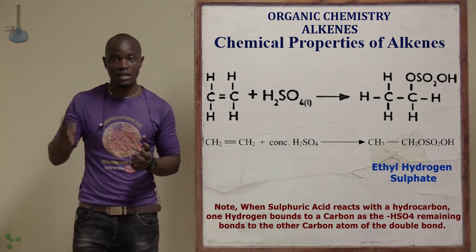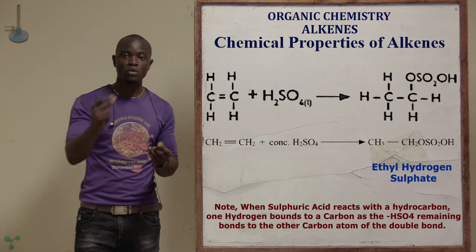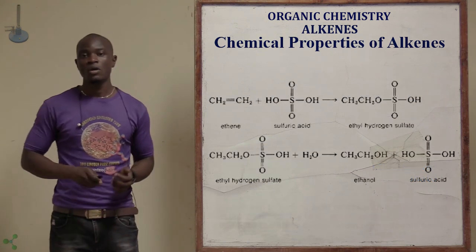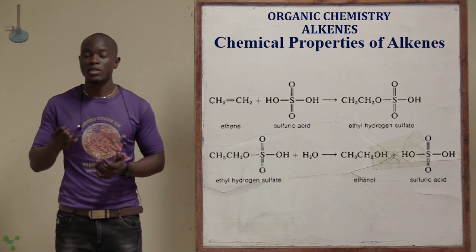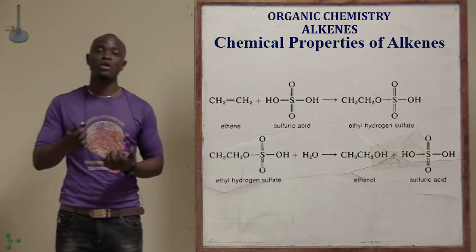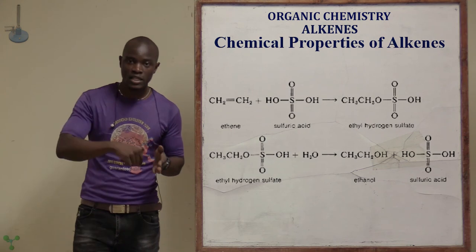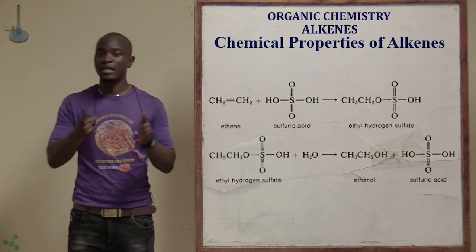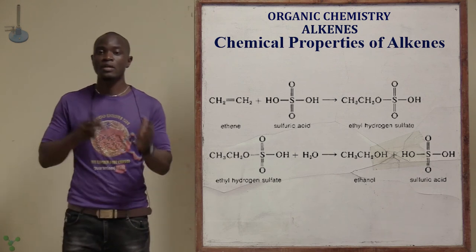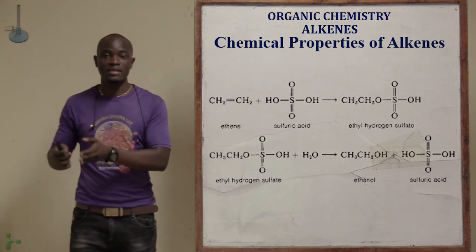The double bond is the one which breaks to release electrons, and the foreign compound bonds to these free electrons to achieve ethyl hydrogen sulfate when it reacts with ethene gas. When this ethyl hydrogen sulfate is added to water, we get an alcohol plus sulfuric acid. So: ethene plus concentrated sulfuric acid gives ethyl hydrogen sulfate; then ethyl hydrogen sulfate reacted with water molecules gives ethanol plus dilute sulfuric acid.